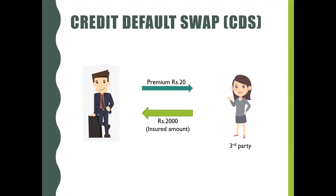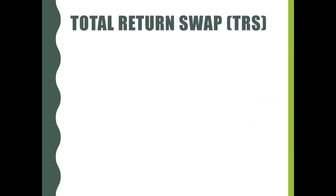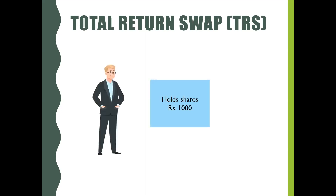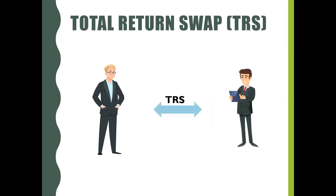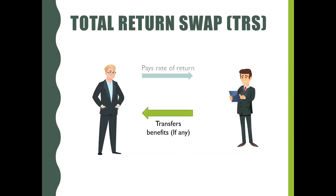Finally, about total return swap. A total return swap gives an investor the benefits of owning securities without actual ownership. Assume John holds shares of D company worth 1,000 rupees and he enters into a TRS contract with Marlin. Now Marlin gets the benefit of owning John's securities. During the swap period, if D company pays a dividend or the share price increases, Marlin will transfer those benefits to John in return for a predetermined interest rate. Here, Marlin receives the rate of return even without holding the actual shares.